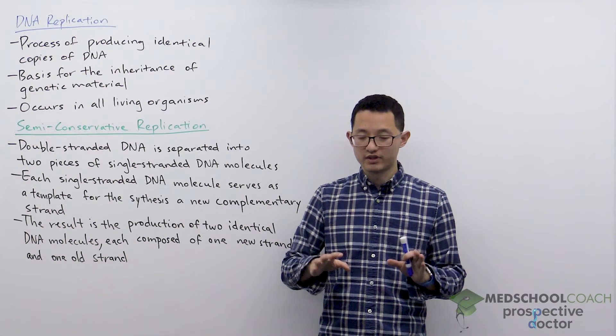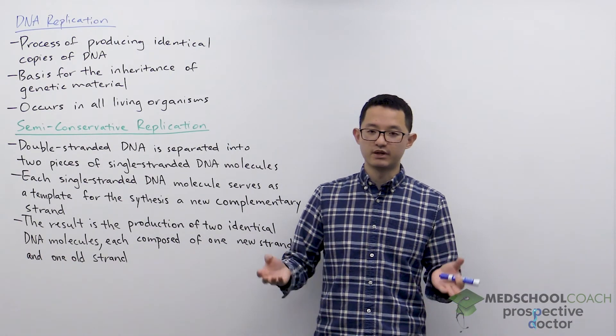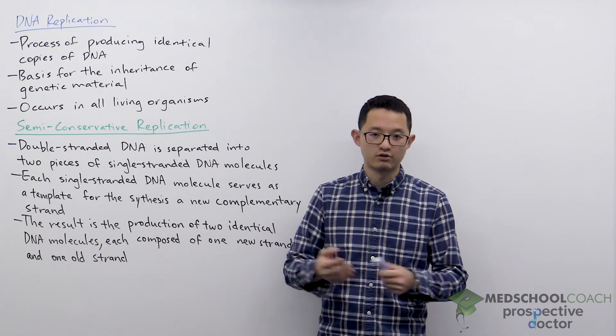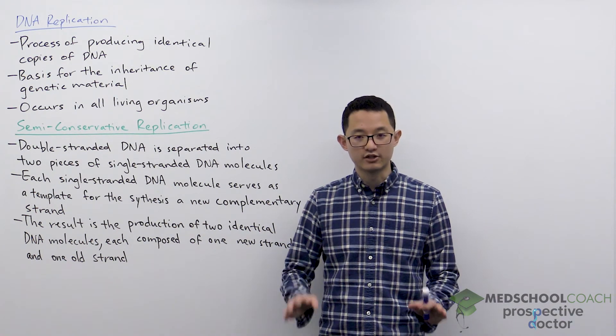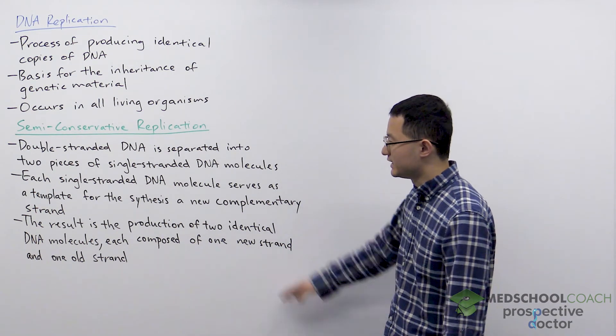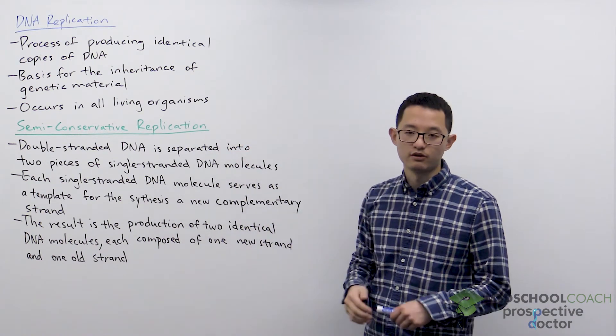Now for the purposes of the MCAT, you don't need to know much about the experiments that prove which model was correct. All you need to know is that the current prevailing model is the semi-conservative replication model.